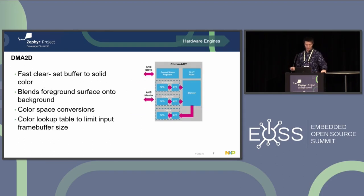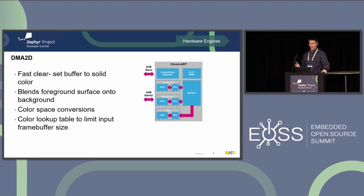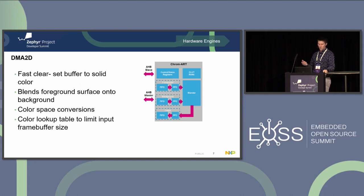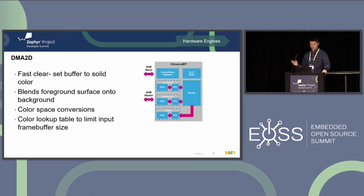DMA2D is a peripheral from ST. It's similar in many ways to the PXP — a 2D DMA engine generally intended for graphics operations. It allows you to blend a foreground surface onto a background via a preset equation using the alpha components. It also lets you set a buffer to a solid color — a fast clear — so if you want a red background you just tell the peripheral. You can also do color space conversions and use color lookup tables, for example to use 8-bit pixels on an RGB 565 display.